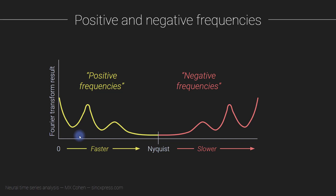Because the amplitudes get split between the positive and negative spectrum, if your signal actually has 10 microvolts at a given frequency, you'll only see 5 microvolts on each side. That's not really convenient — we want to look at the Fourier spectrum and get an accurate assessment of the actual units and real energy in the signal. To do that, you need to know about two scaling factors in the Fourier transform, and that is the topic for the next video.